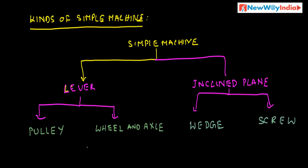These are the different types of simple machines. Simple machines are broadly divided into lever and inclined plane. If these are modified, we get pulley and wheel and axle from the lever, and wedge and screw from the inclined plane. So these are the different types of simple machines.